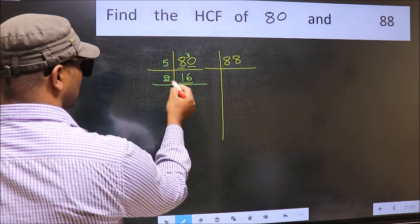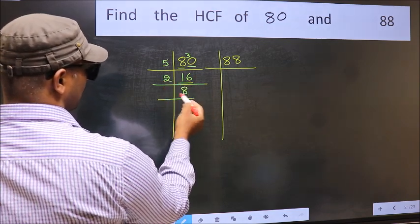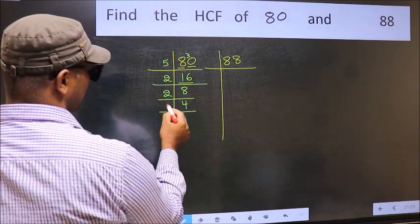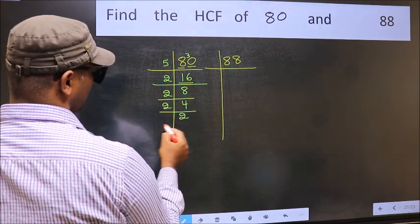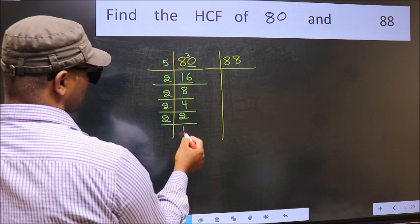Now 16 is 2, 8, 16. 8 is 2, 4, 8. 4 is 2, 2, 4. 2 is a prime number so 2 once 2.